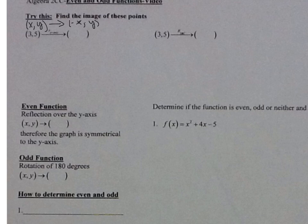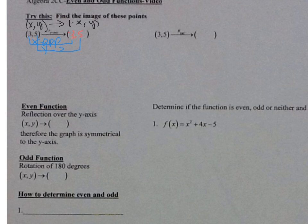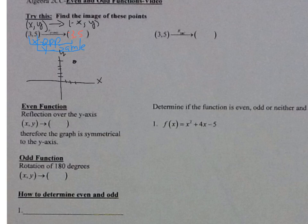So if I have (3, 5), it becomes (negative 3, 5). Notice the x-values are opposite and the y-values are the same. When you have a reflection over the y-axis — graphing 3,5 and then negative 3, 5 — the points are symmetrical to the y-axis. It's a mirror image, so that's symmetrical to the y-axis.